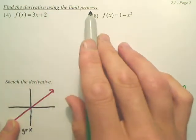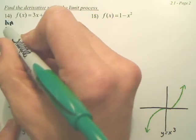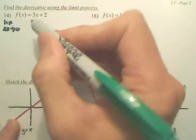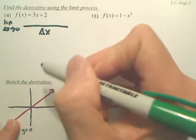We're going to find the derivative using the limit process. The limit process is a limit as change of x approaches zero. Delta x is always on bottom.